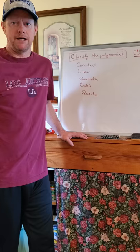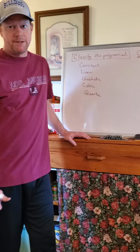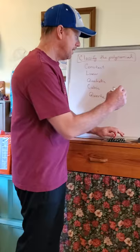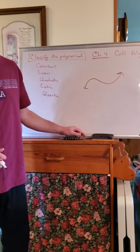And so this is Chapter 4, classifying polynomials. Polynomial functions are smooth, continuous, no gaps, no holes, and they can be drawn without lifting your marker off of the board. So it has to be smooth, continuous, no gaps, no holes, no cusps, no sharp corners, and that's what a polynomial is.